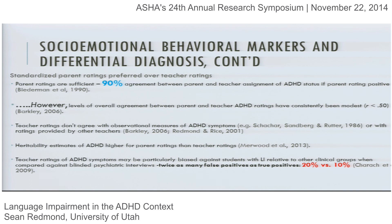The gold standard in clinical practice seems to be standardized rating scales, often collected from parents and teachers. I'm going to suggest that in the context of looking for ADHD symptoms in children with language impairments, we move towards preferring parent ratings over teacher ratings. When parent ratings are positive for ADHD status, 90% of the time they agree with teacher assignment of ADHD status. However, overall levels of agreement between parent and teacher ADHD ratings have been consistently modest in the literature — less than 0.5 levels of concordance.